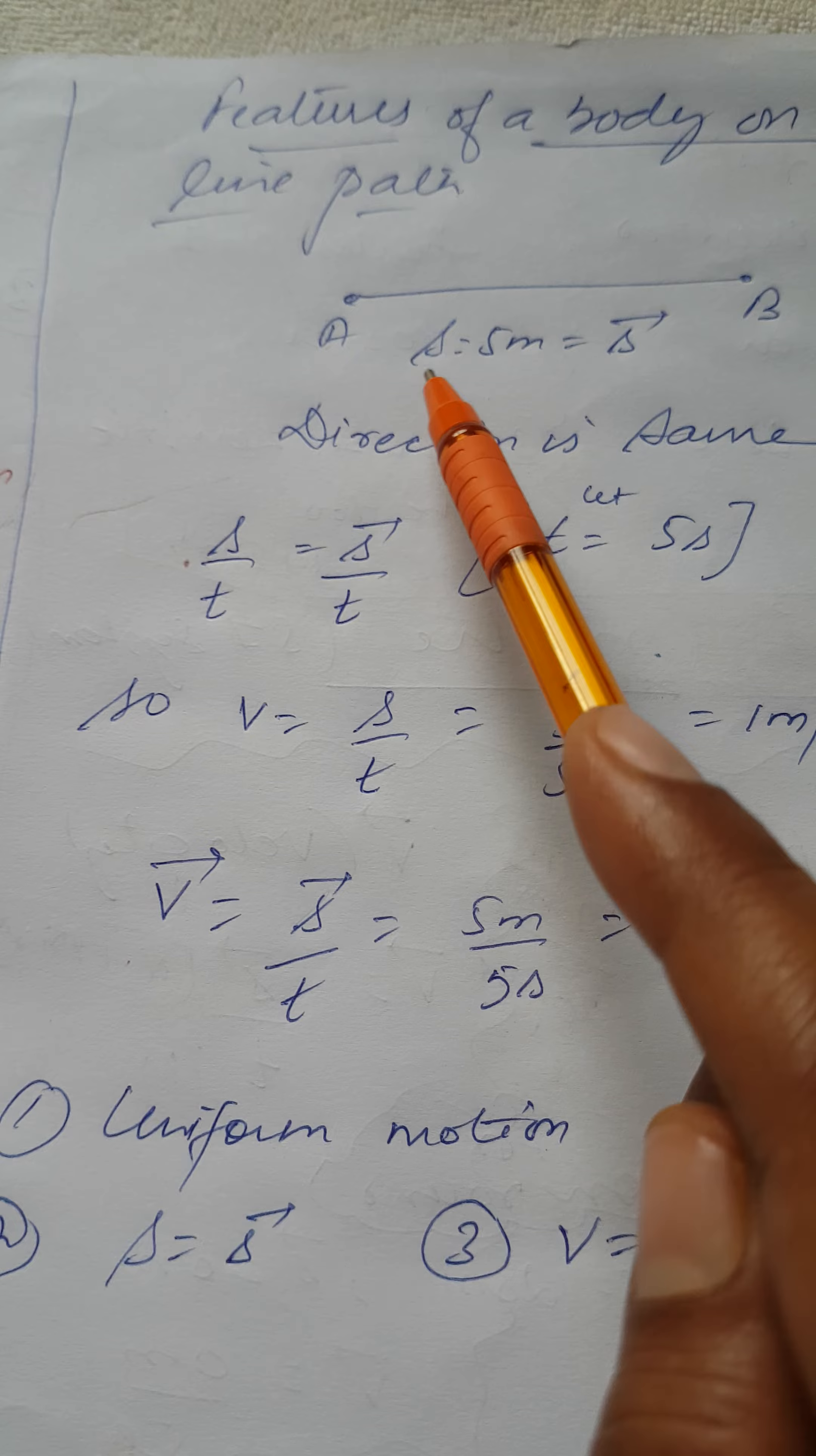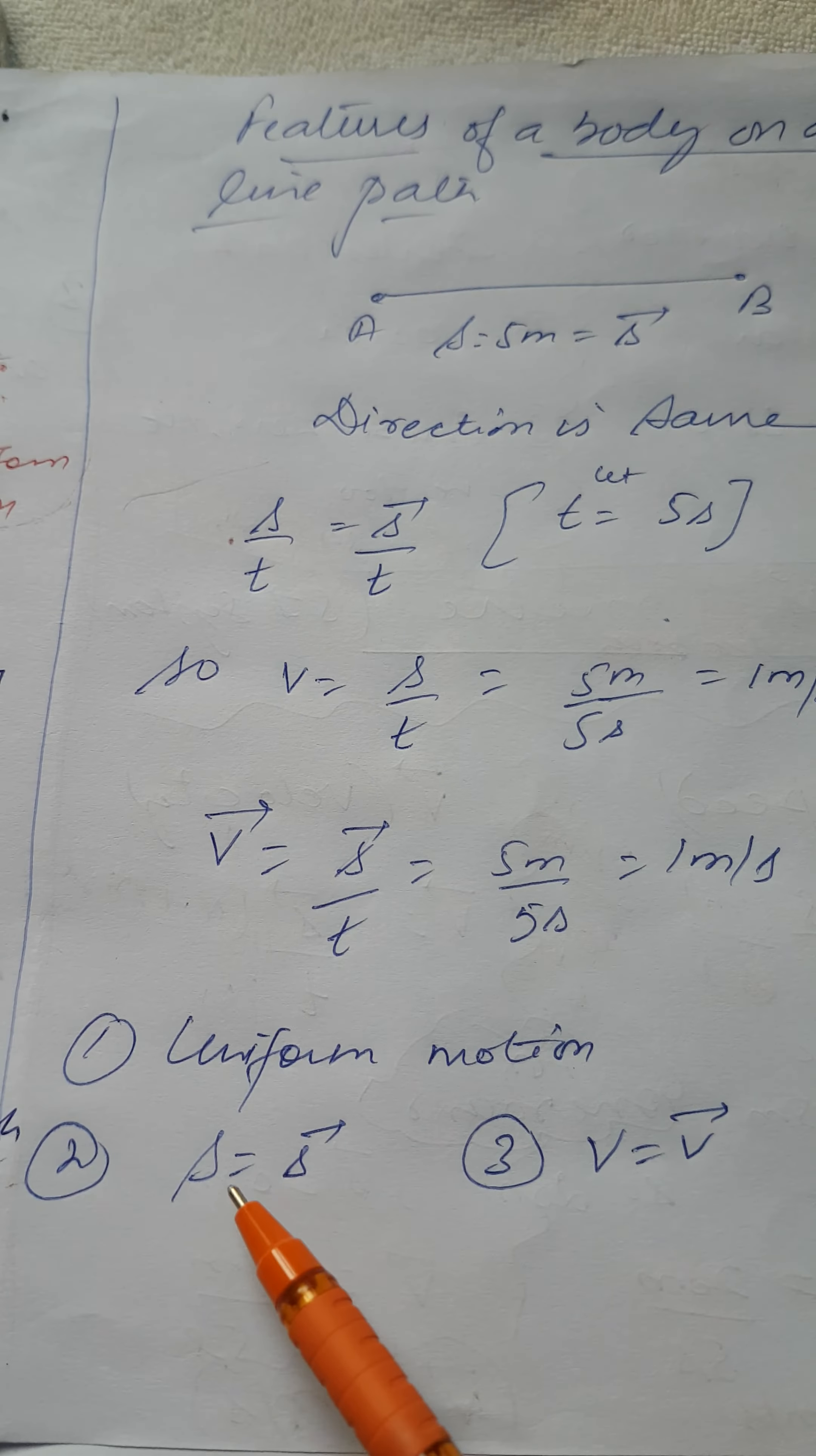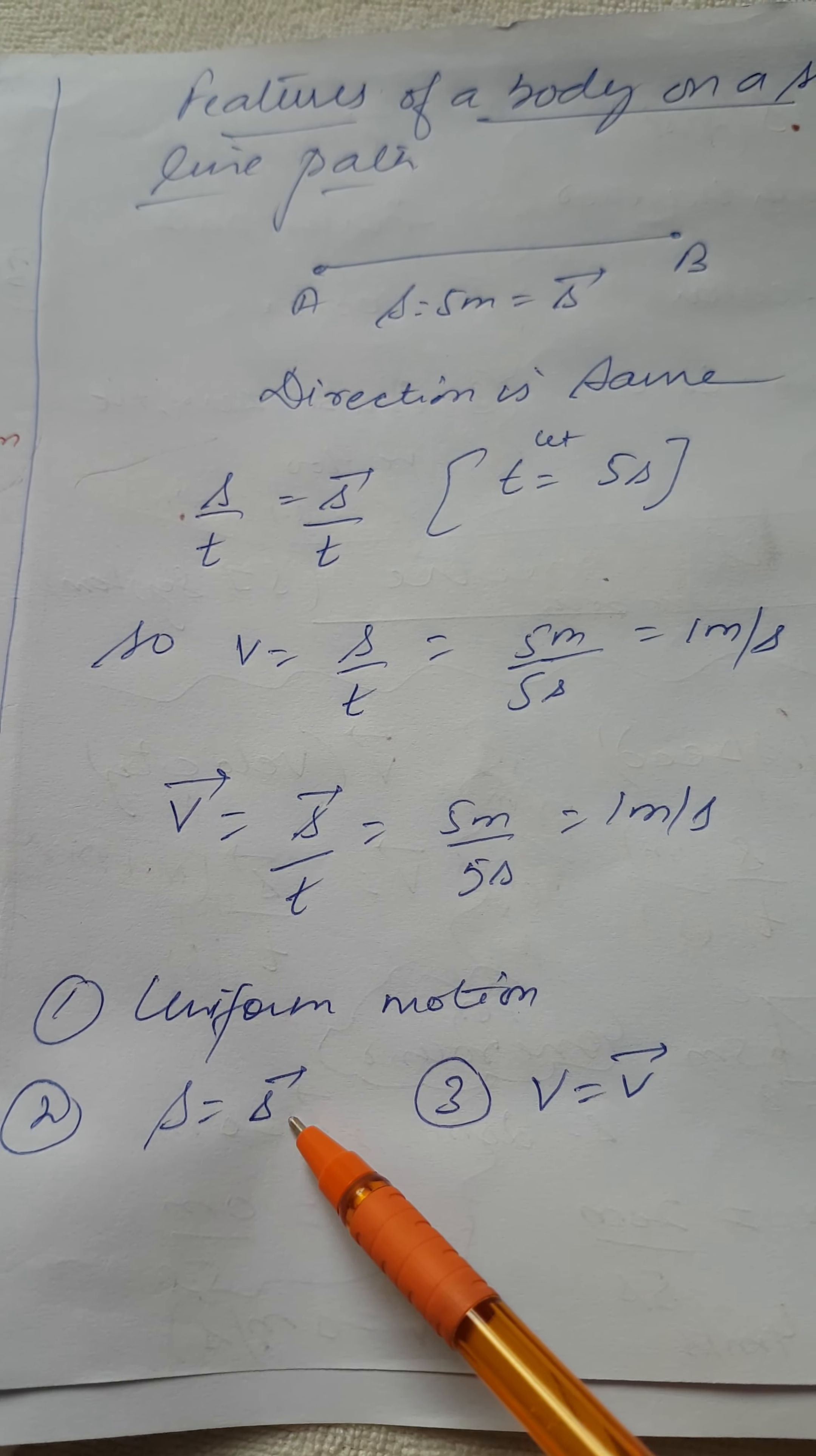The body has not changed its direction. So the distance and displacement becomes equal. So the first thing about straight line motion is that the distance and displacement of a body will always remain same when a body is on a straight line path.